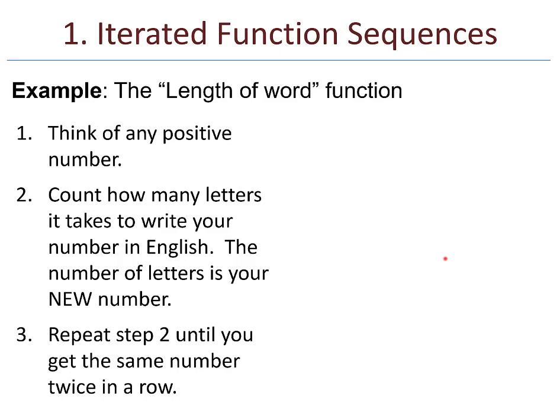Here's an example. This is the length of word function. Think of any positive number, count how many letters it takes you to write your number in English. The number of letters is your new number. Repeat until you get the same number twice in a row. For example, let's say we start with the number one. One written out in English is O-N-E, so one goes to three because O-N-E has three letters. Three has five letters, so three goes to five. Five has four letters, so that goes to four. And look what happens here. Four has four letters, so four actually just loops around to four.